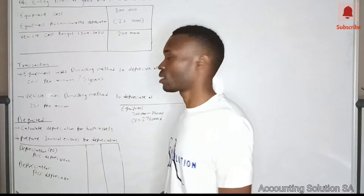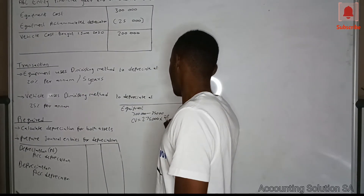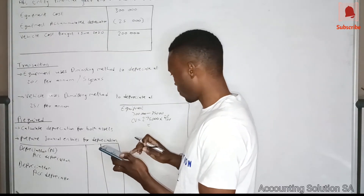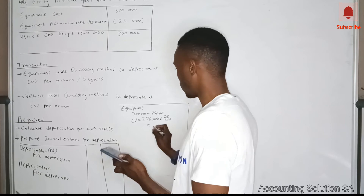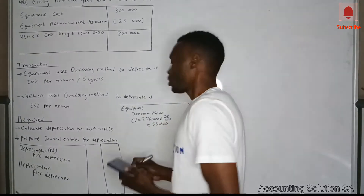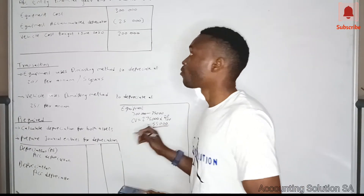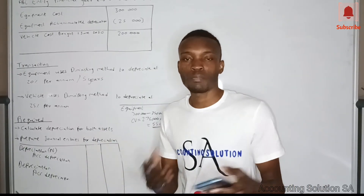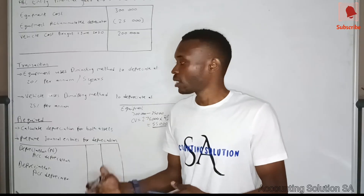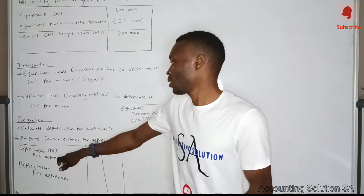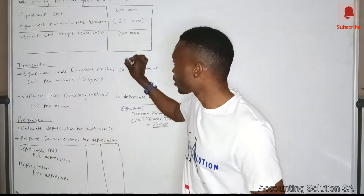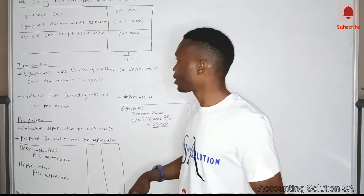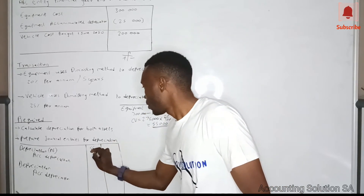We multiply the carrying value by 20%, or divide by five years. So 275,000 divided by five years, or multiplied by 20%, gives us 55,000. That is our depreciation for the year for equipment. In the general journal entry, we debit depreciation — because it's an expense — and credit accumulated depreciation, since accumulated depreciation is a negative asset that decreases on the debit side. The amount is 55,000.